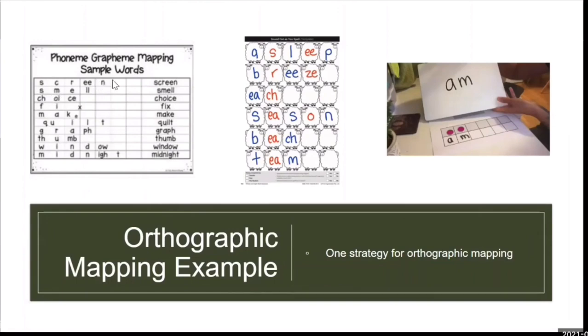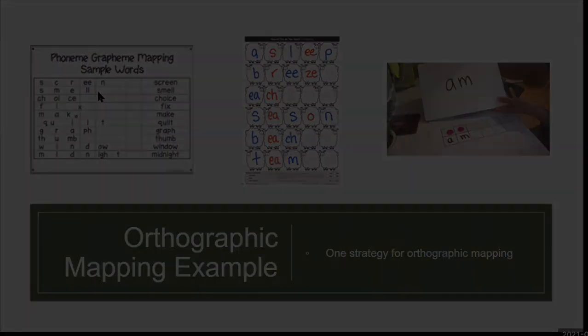But basically, I'll show you other ways to do it too. You're helping students, the point of this, and this starts going to your question about sight words, which I'll get into in a minute, that you're helping students see the letter sequence and memorize that letter sequence so that the word becomes automatic. That's basically what you're doing in orthographic mapping.